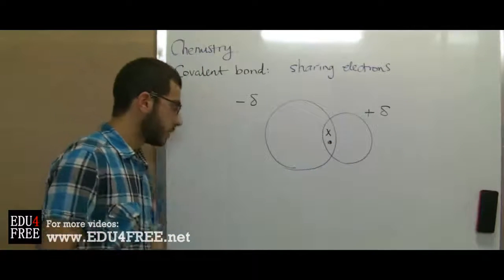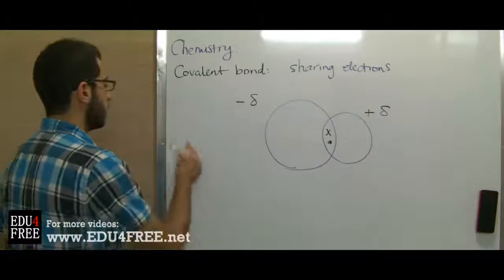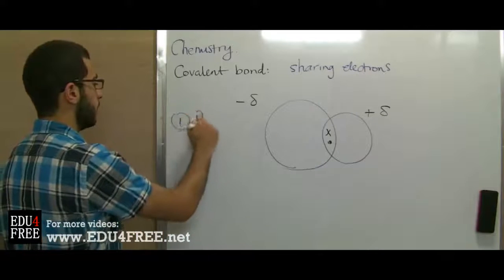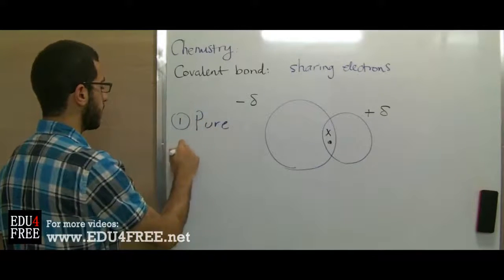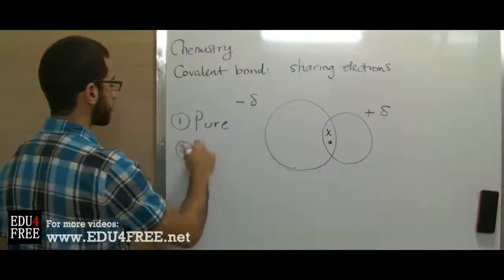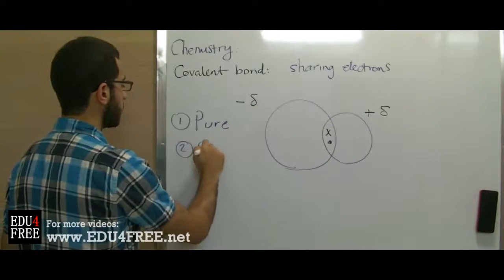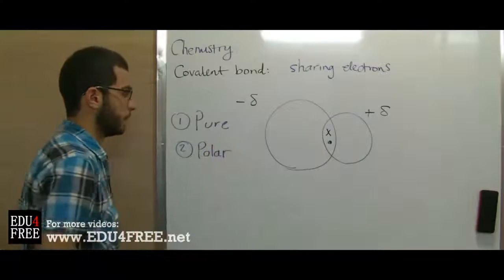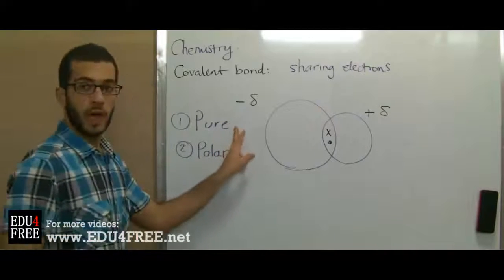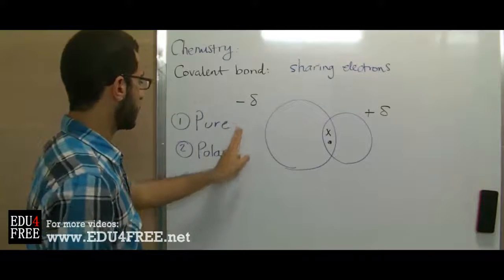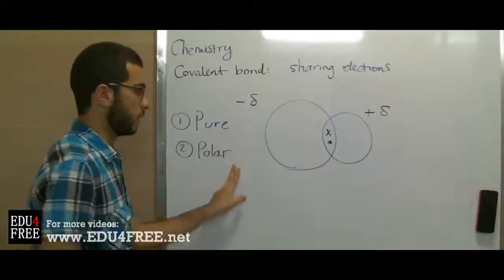Now the covalent bond has two types: a pure covalent bond and a polar covalent bond. Let's see why we have two categories, pure and polar covalent bonds.